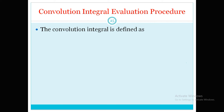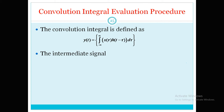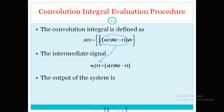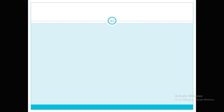This is the convolution integral evaluation procedure. The main formula is: y(t) equals the integral from minus infinity to infinity of x(τ) h(t − τ) dτ. We introduce an intermediate signal — the inner part of the integral is named w_t(τ), so that y(t) equals the integral from minus infinity to infinity of w_t(τ) dτ.